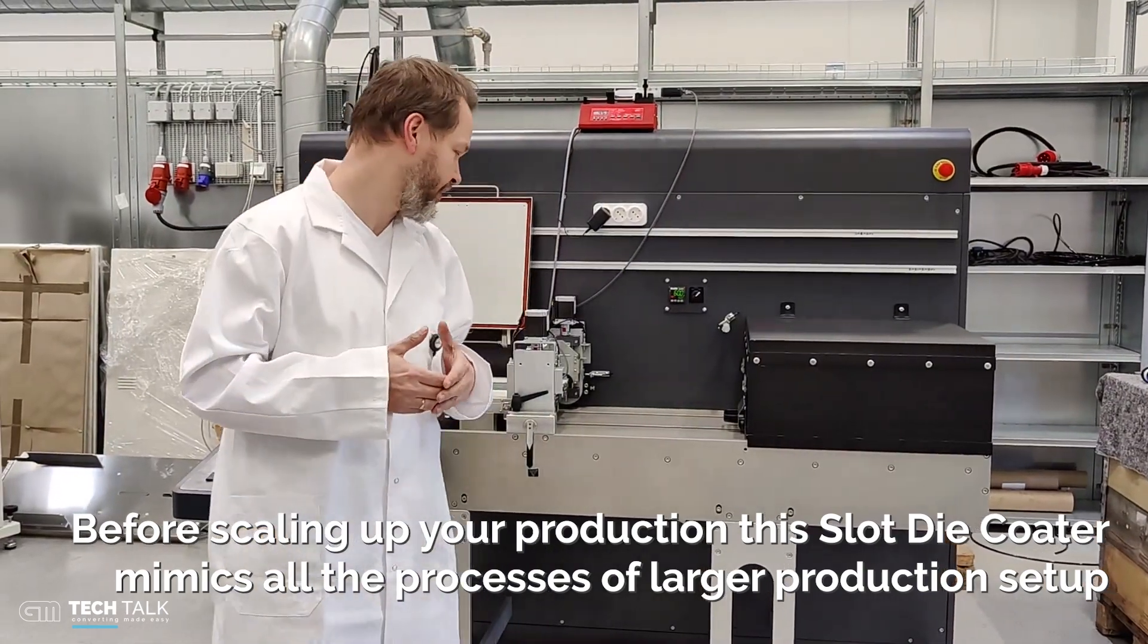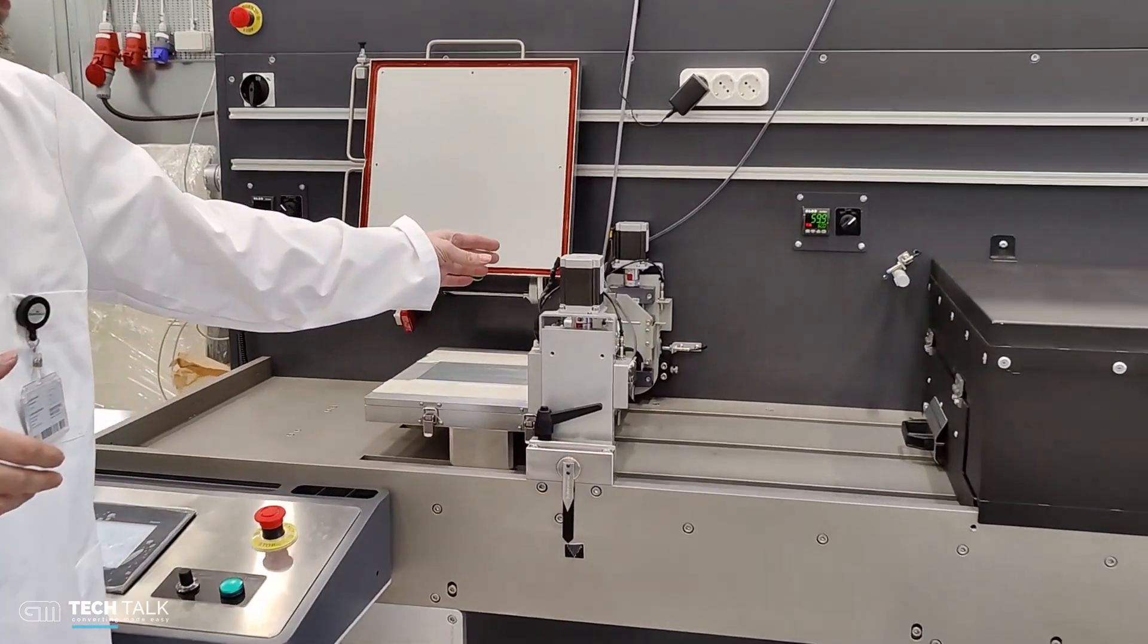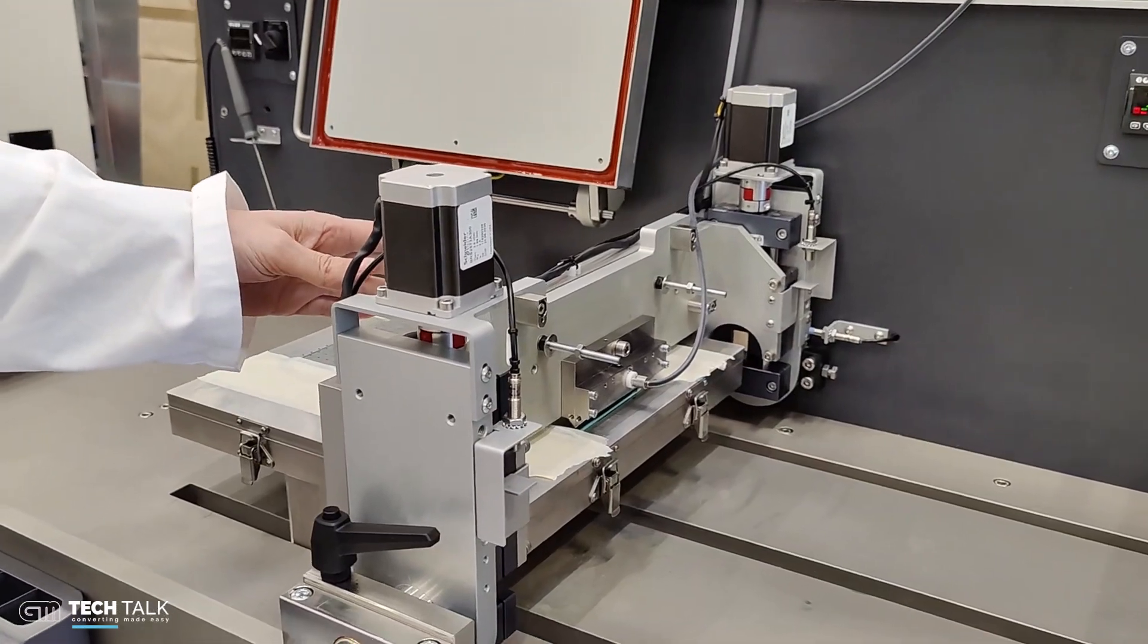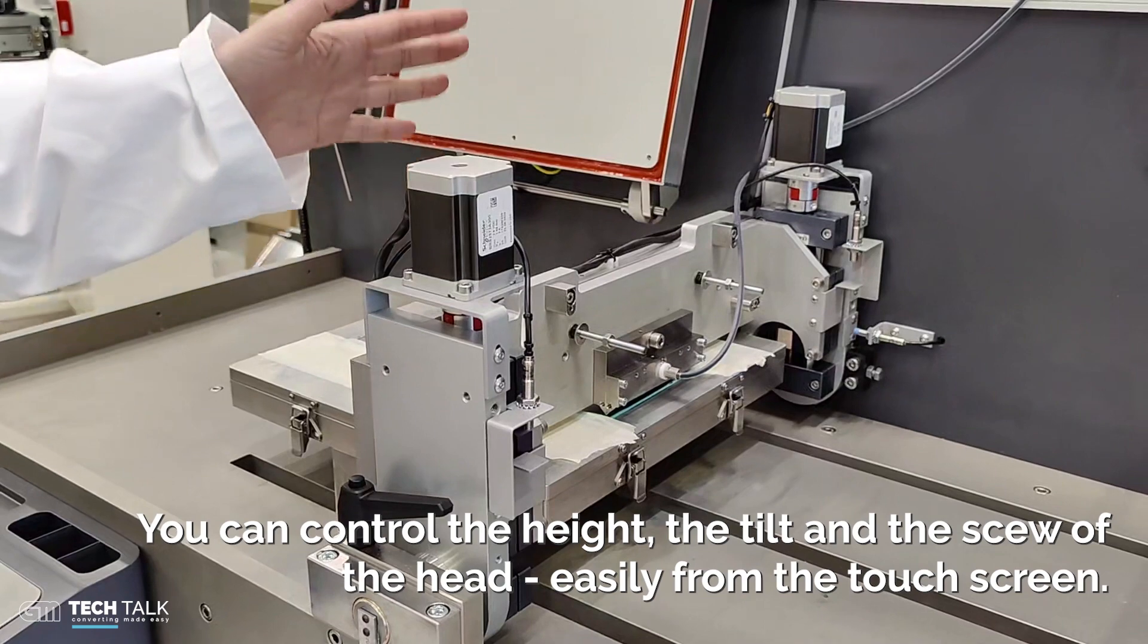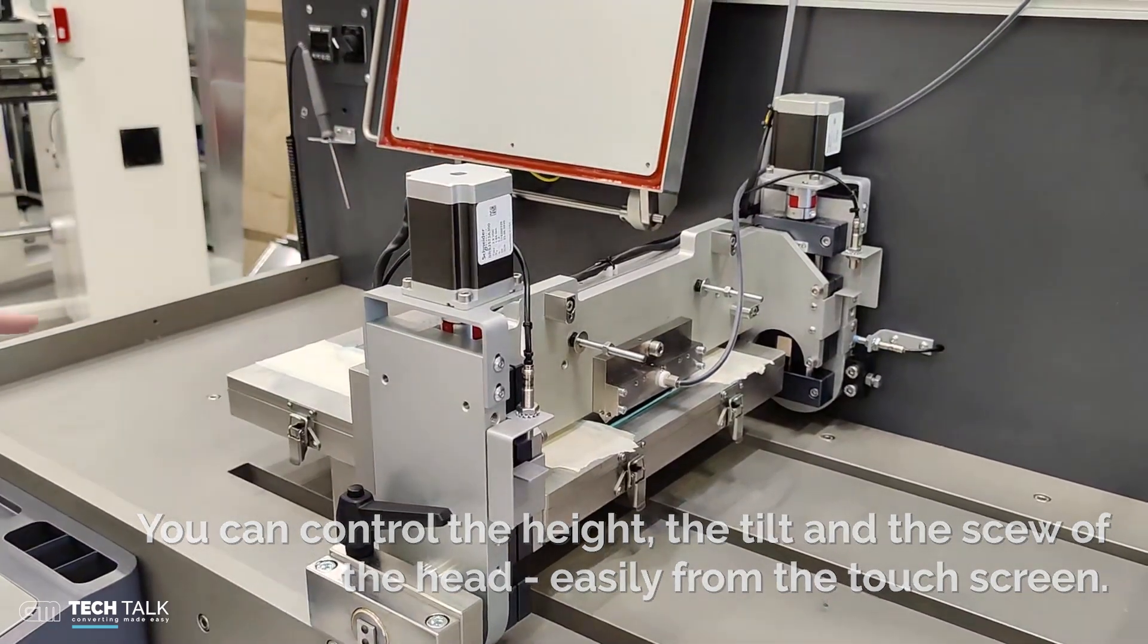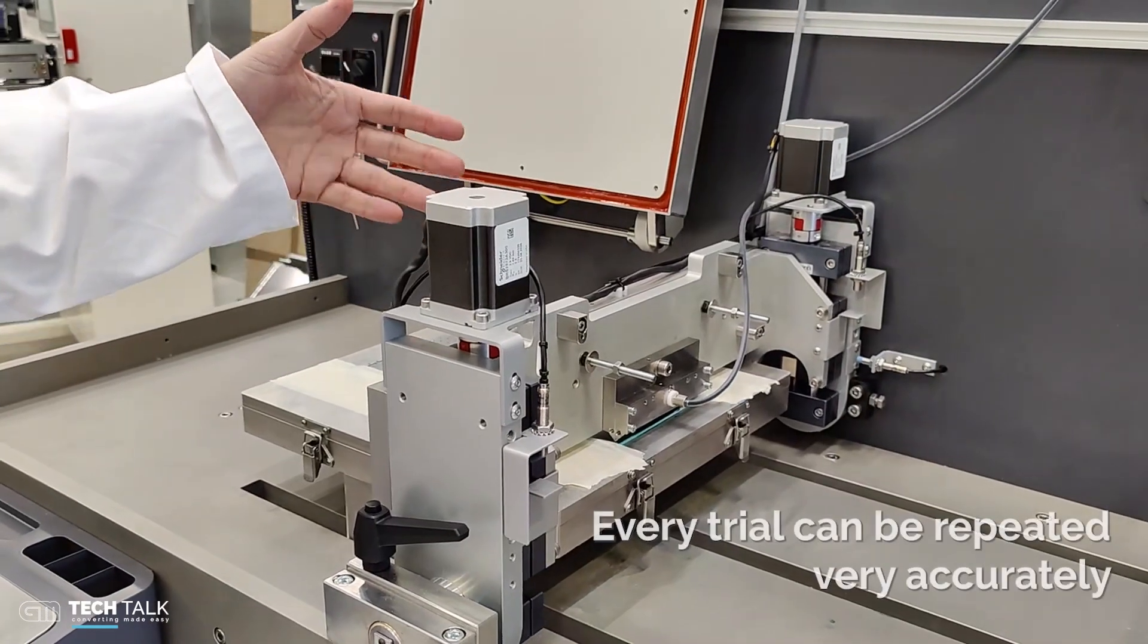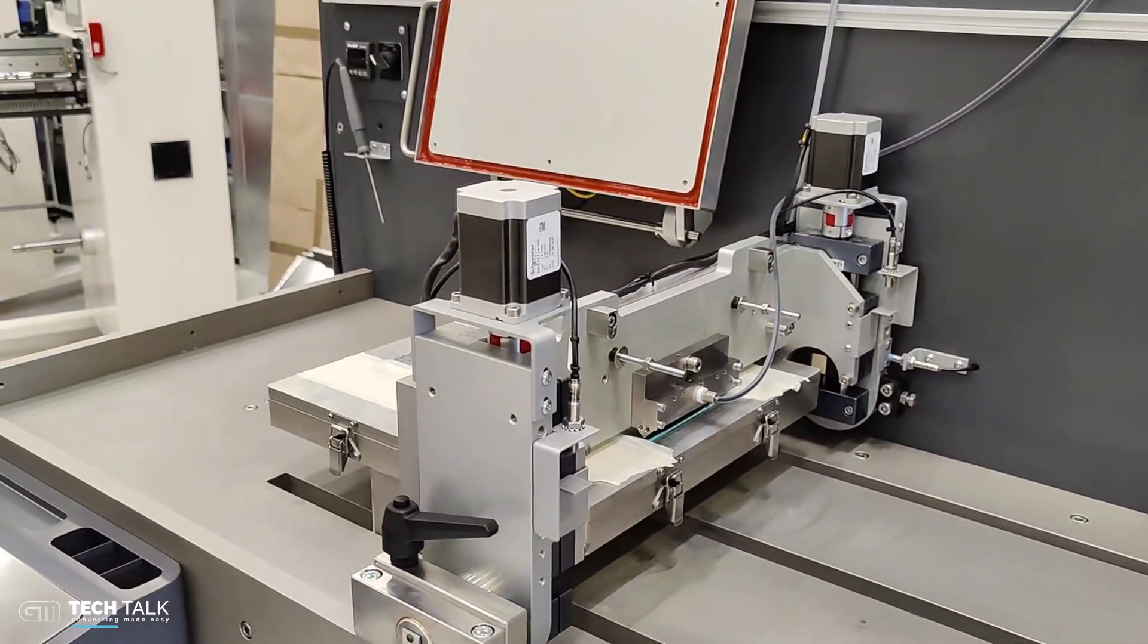The machine has a slot dye coating bay with one slot dye coating head. It's mounted on a picotily controlled head mount. That means that we can control the height, the tilt, and the skew of the head from a touchscreen. So no manual adjustments. You can repeat every trial very accurately by storing the parameters in the computer.